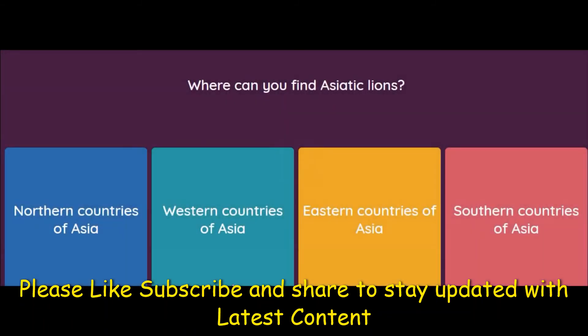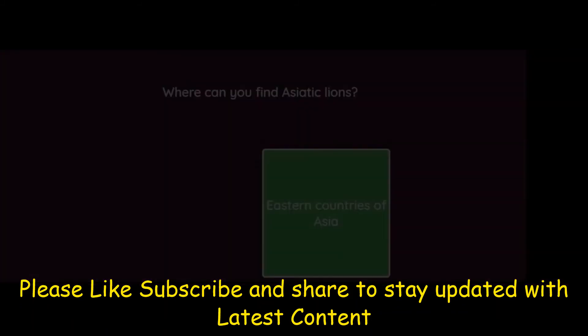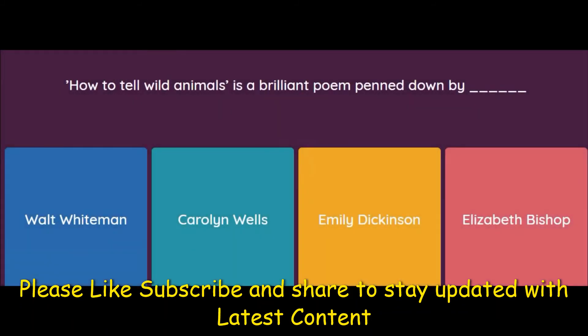Where can you find the Asiatic lion? Options: Northern, Western, Eastern, or Southern countries of Asia. The answer is Eastern countries of Asia. Next: 'How to Tell Wild Animals' is a brilliant poem written by Walt Whitman, Carolyn Wells, Emily Dickinson, or Elizabeth Bishop. You must have guessed — it's Carolyn Wells.